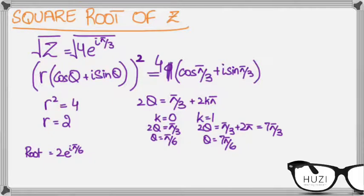Now principal argument between minus 5 pi by 6. So the other root is going to be 2e to power minus 5 pi by 6. So this could be written as minus 5 pi by 6. So your other root is going to be 2e to power minus 5 pi by 6.